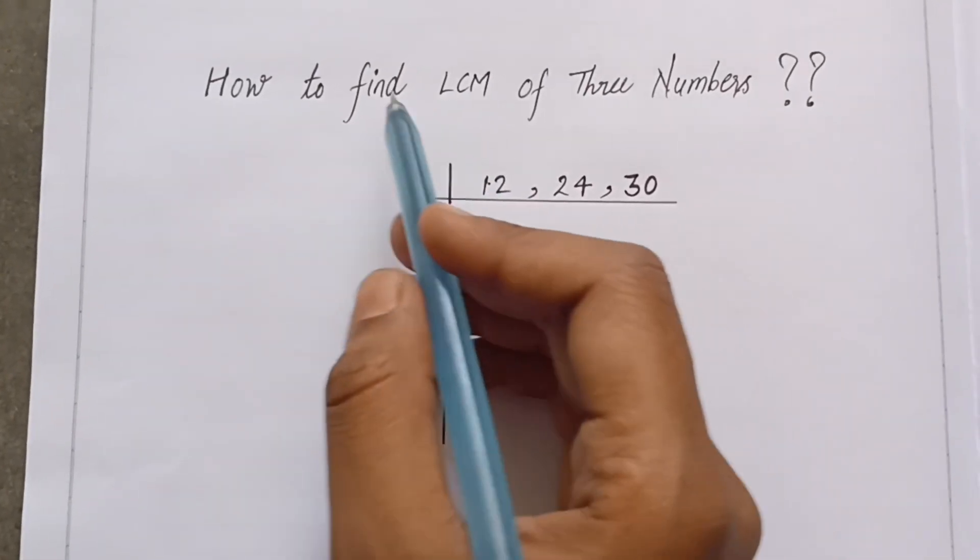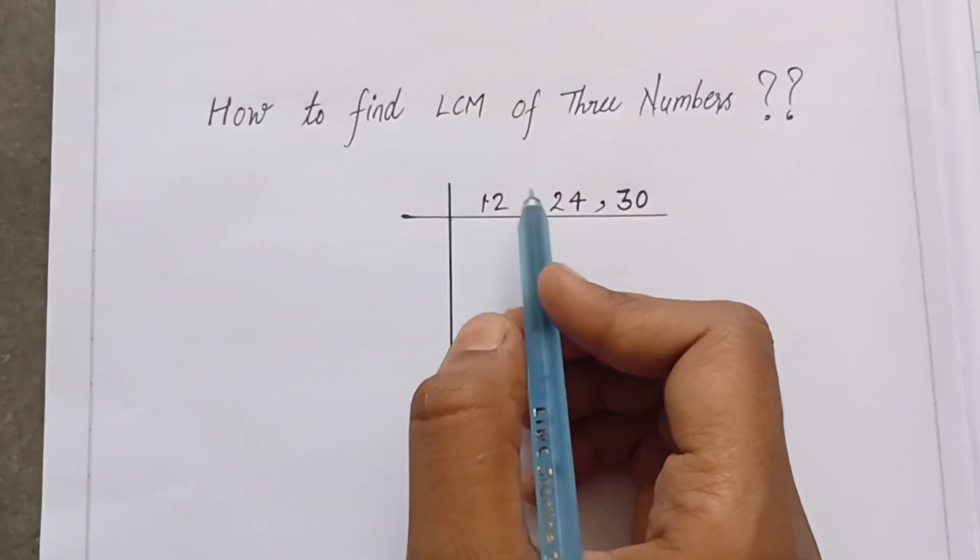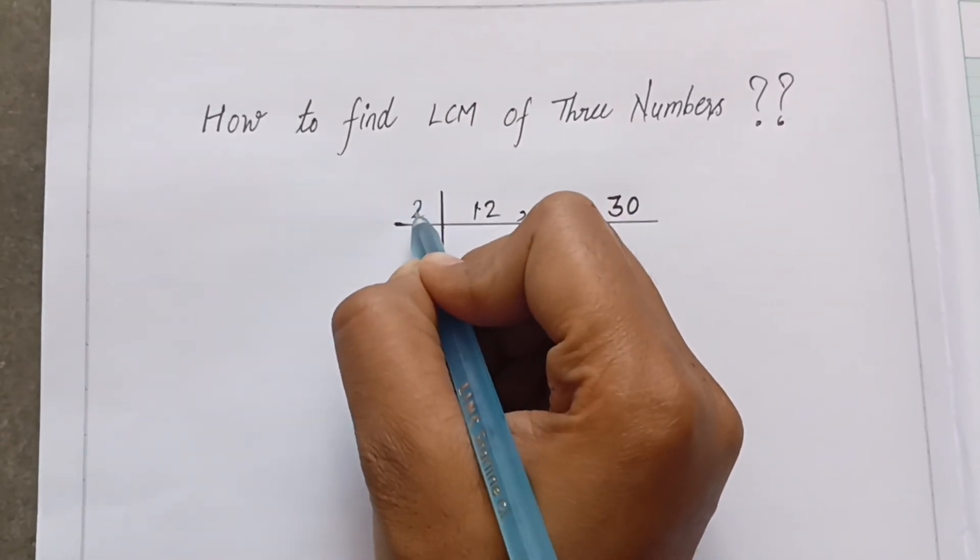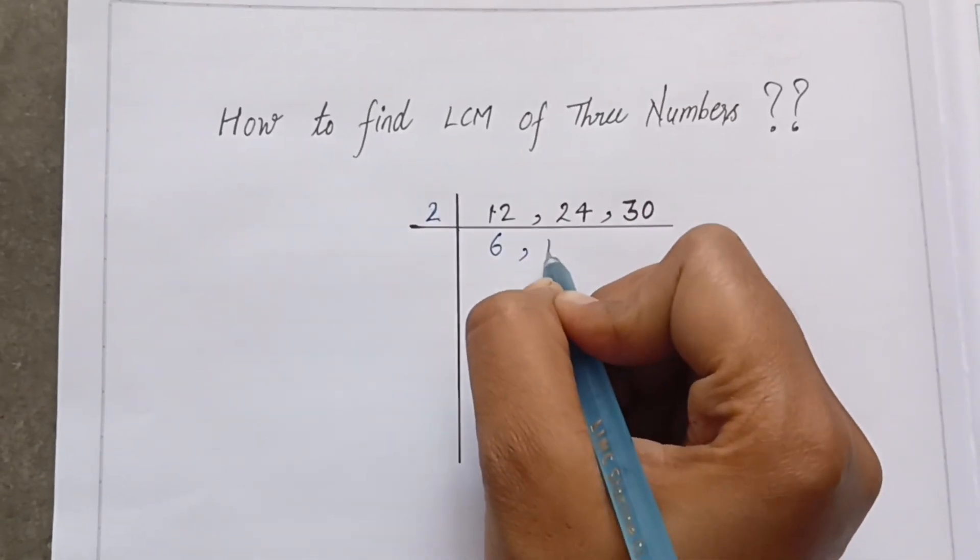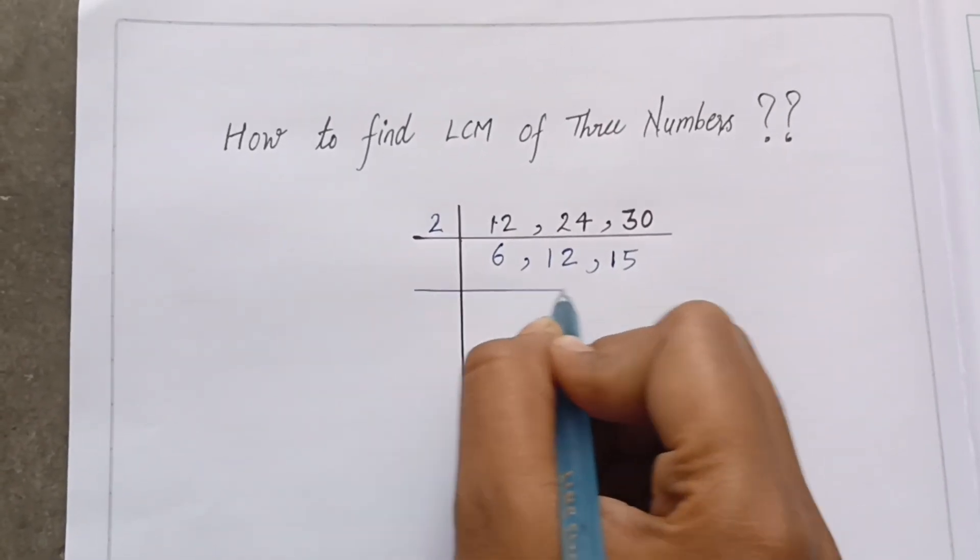Hello friends, welcome back to my channel. Today we are going to learn how to find LCM of three numbers. First we will start from 2, so 2×6 are 12, 2×1s are 2, 2×2s are 4, 2×1s are 2, 2×5s are 10. Now we will cut from 3.